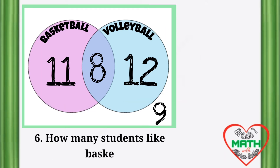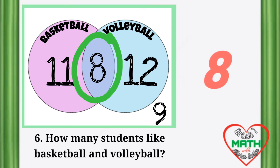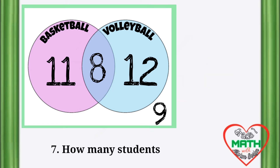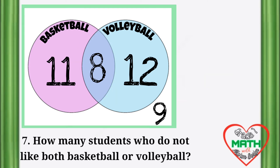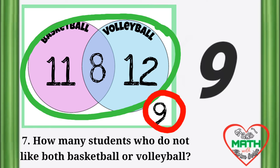Number 6: how many students like basketball and volleyball? We get the intersection of the sets — there are 8 students who like both basketball and volleyball. For number 7: how many students do not like basketball or volleyball? Since the students outside both circles are those who don't like either, there are 9 students who do not like basketball or volleyball.